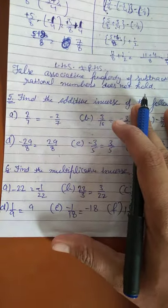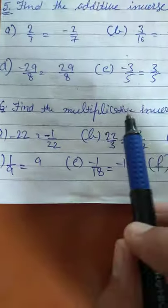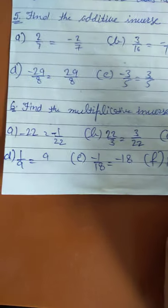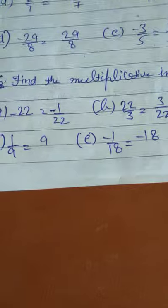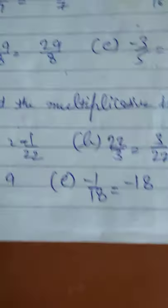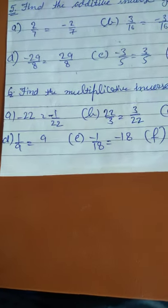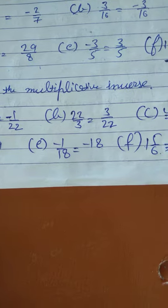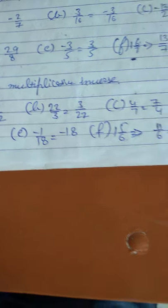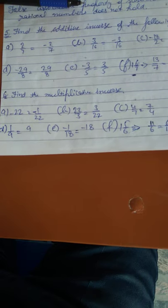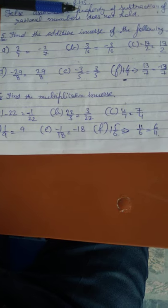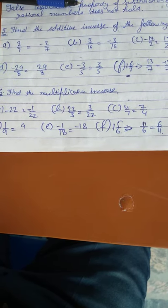You can also convert mixed fractions to improper fractions before finding the additive inverse. Next, find the multiplicative inverse. The multiplicative inverse is the number which, when multiplied by the rational number, gives 1. So the multiplicative inverse of minus 22 is minus 1 over 22; of 22 and 2 over 3 is 3 over 22.